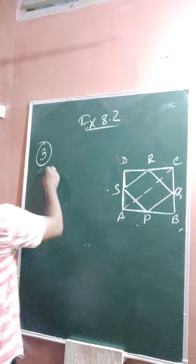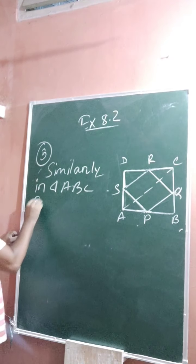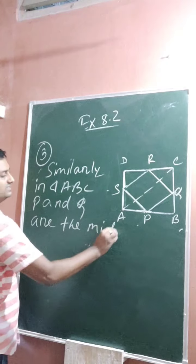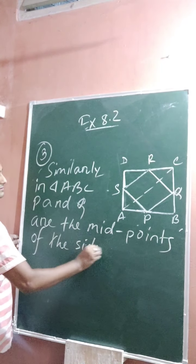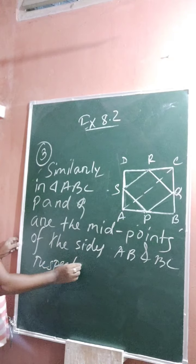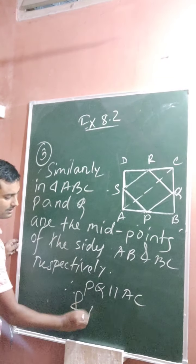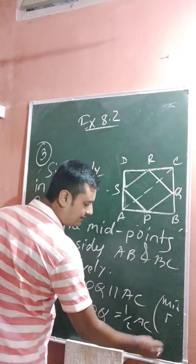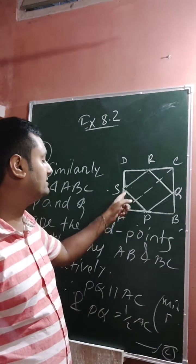Similarly, in triangle ABC, P and Q are the midpoints of the sides AB and BC respectively. Therefore, by the midpoint theorem, PQ is parallel to AC and PQ is equal to half of AC. Give this equation number 2. According to equation 1, SR is parallel to AC and SR equals half of AC; according to equation 2, PQ is parallel to AC and PQ equals half of AC.